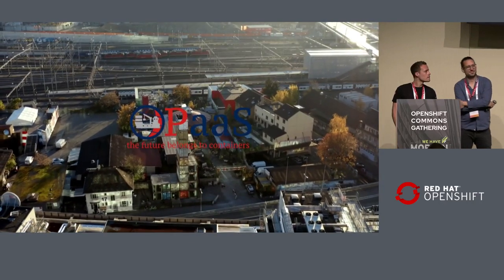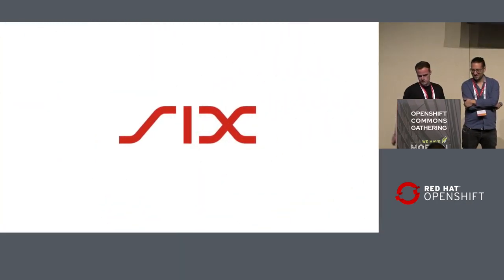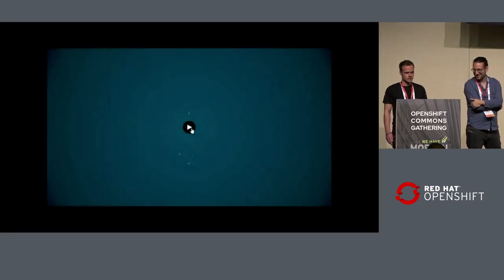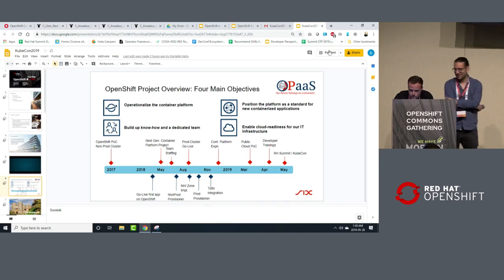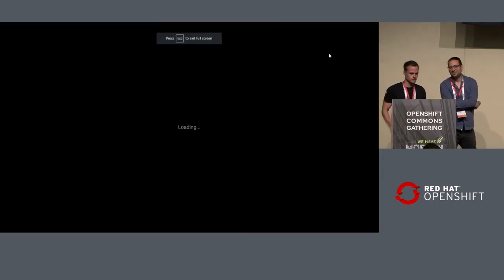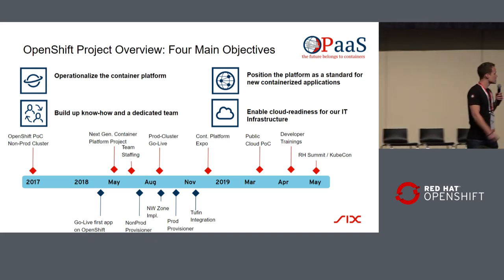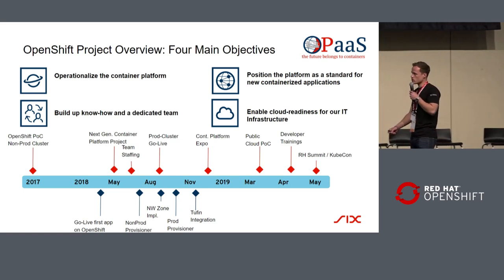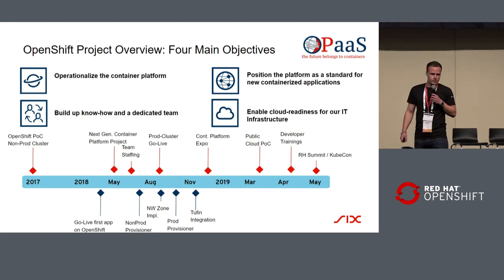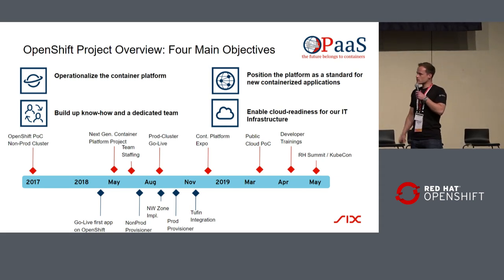The future belongs to containers. In Six, we started in 2017 using OpenShift, putting a cluster into non-production. The funny thing about that is we started with one guy and one project manager — it was a one-man show. If Oliver Guckenbuehl will see this video, credits to you — it was really cool work.